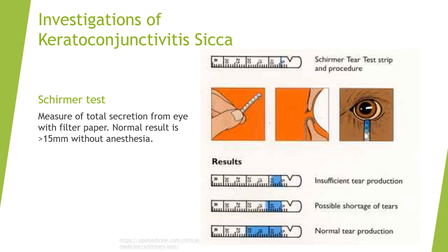The final test we'll cover is the Schirmer test, which checks for the amount of tear film produced by putting a filter paper at the edge of the eyelid for 5 minutes. The amount of tear produced is quantified by how much the tear stain travels along the filter paper. More than 15 millimeters without anesthesia is normal, around 10 is slightly abnormal with a possible shortage of tears, and less than 10 would be a conclusion for insufficient tear production.